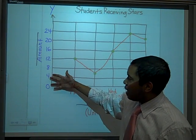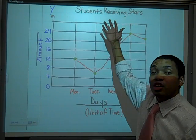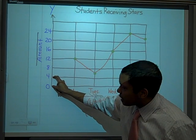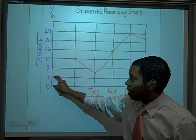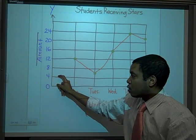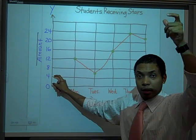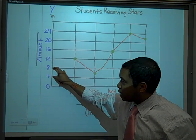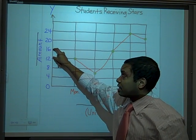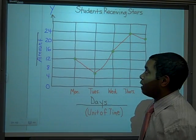Looking at our example, the y-axis shows the amount of stars. I can determine the scale: from zero to the first line is four, so every line after that should be four more. Four, eight, twelve, sixteen, twenty, twenty-four — and so on. So the scale here goes up by four each line.